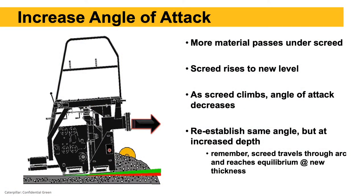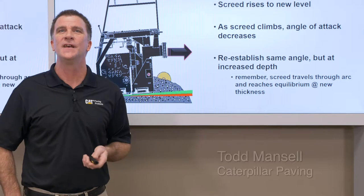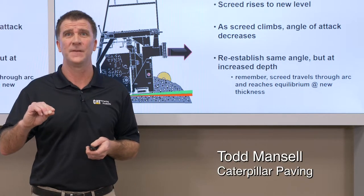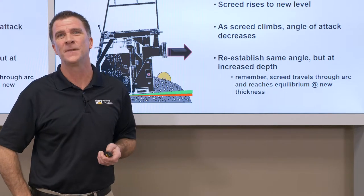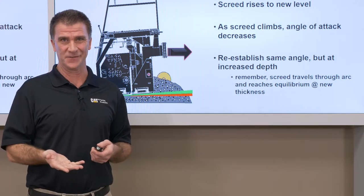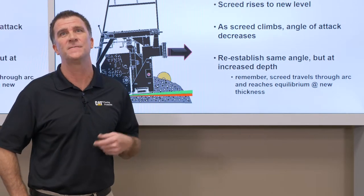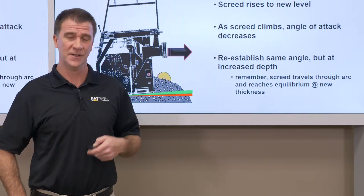What happens when we change mat thickness? For example, if we turn the depth cranks to increase mat thickness, we increase the angle of attack of the screed, which allows more mix to flow underneath and raises the screed to an increased mat thickness. If we turn the depth screws the other way, we decrease the angle of attack, allow less mix underneath, and mat thickness decreases. The depth screws temporarily change the angle of attack; then the screed travels through a 360-degree arc, changes thickness, and resumes the original angle of attack — that original eighth or quarter inch.